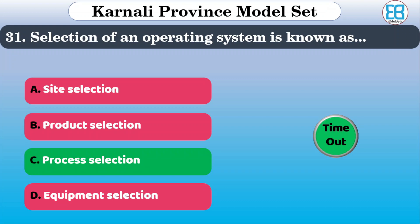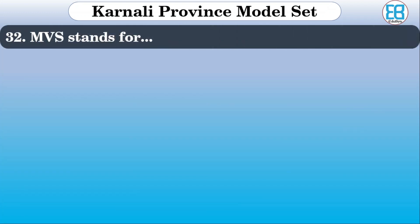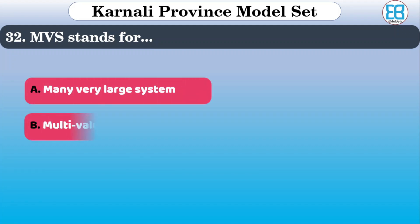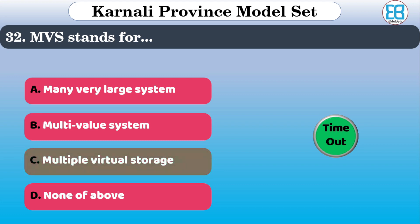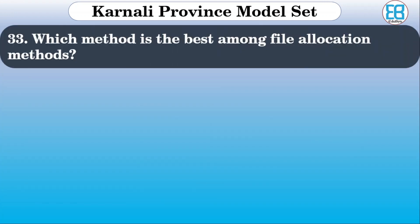MVS stands for what? The options are: multi-value large system, multi-value system, multiple virtual storage, none of the above. The correct option is Multiple Virtual Storage.